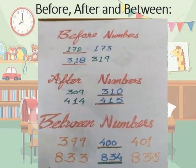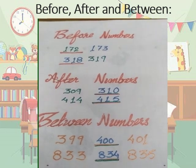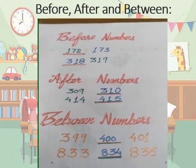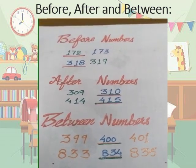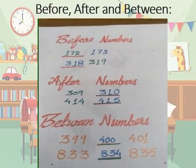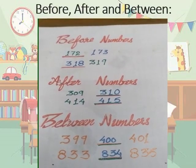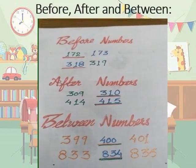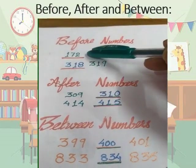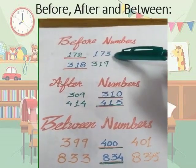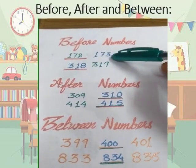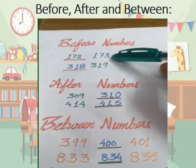Our next topic is before, after, and between numbers. Before a number means backward counting where we take away 1 from each number. The after number means forward counting where every number is 1 more than the previous. For example, before 173 the number comes 172 — we take away 1 from 173.